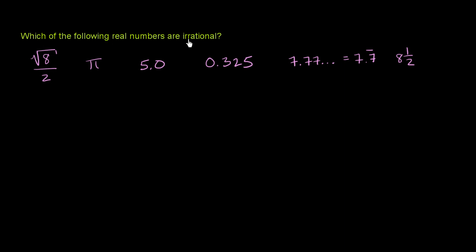Which of the following real numbers are irrational? Well, irrational just means it's not rational. It means that you cannot express it as the ratio of two integers.